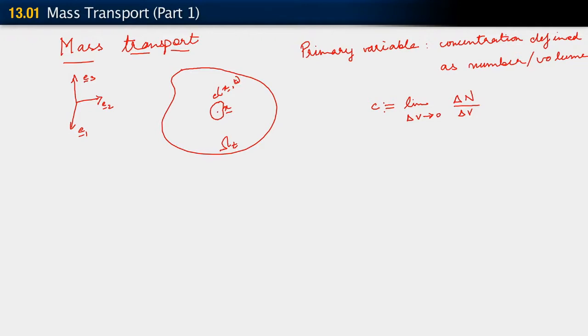I realize now that it's best not to refer to the configuration as omega sub t — let's keep it more general by just saying omega. The sub t can be confused with actually changing with time, and time is going to change in our treatment. So we just get that out of the way. This is our primary variable: the concentration, defined as number of particles per unit volume.